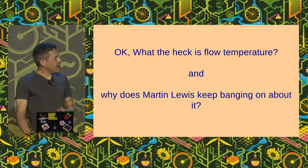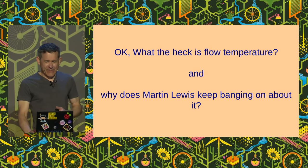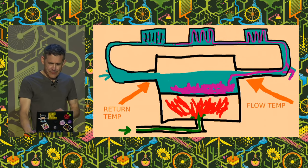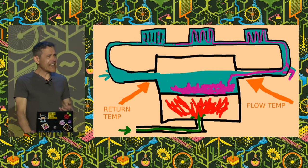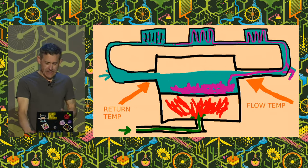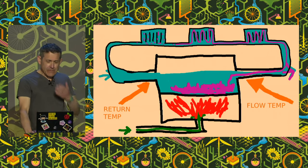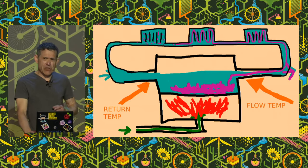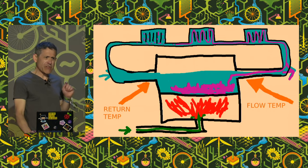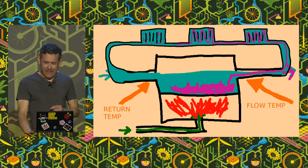Martin Lewis talks about flow temperature a lot, but he never completely explains why — so that's why I'm here to explain. Flow temperature is basically just the temperature of the water as it leaves, or is flowing out of the boiler, right on this picture. For extra info, there's another thing called the return temperature, which is just the temperature of the water that's returning into the boiler. Why this matters will become apparent in a few minutes.